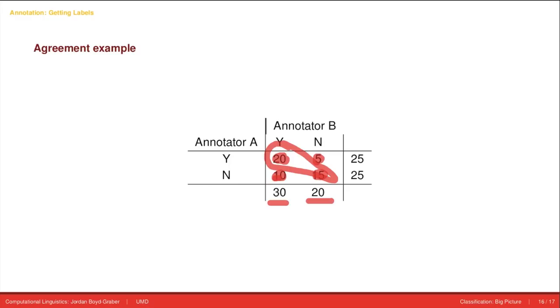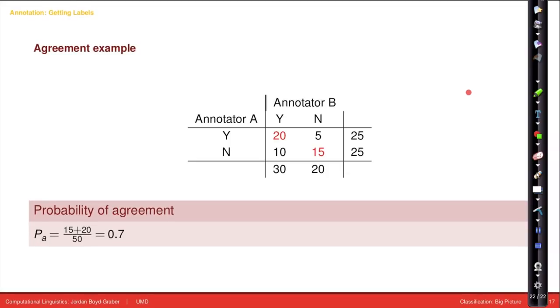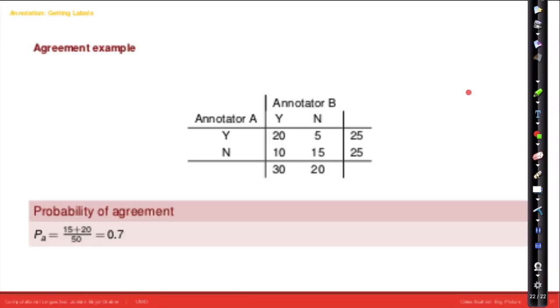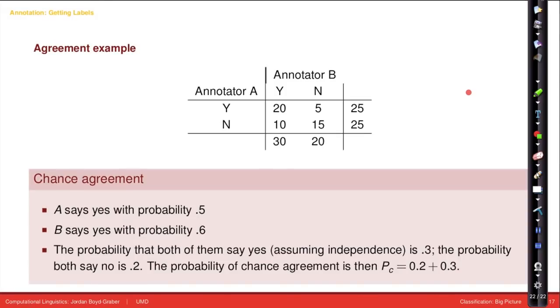Let's say you have two annotators, A and B. When annotator B says yes, annotator A says yes 20 times. When annotator B says no, annotator A says yes 5 times. Ideally, you want everything on the diagonal, but you can also tell that there are far more yeses than nos. The probability of agreement examples, they agree 35 times. So that's 0.7 agreement.